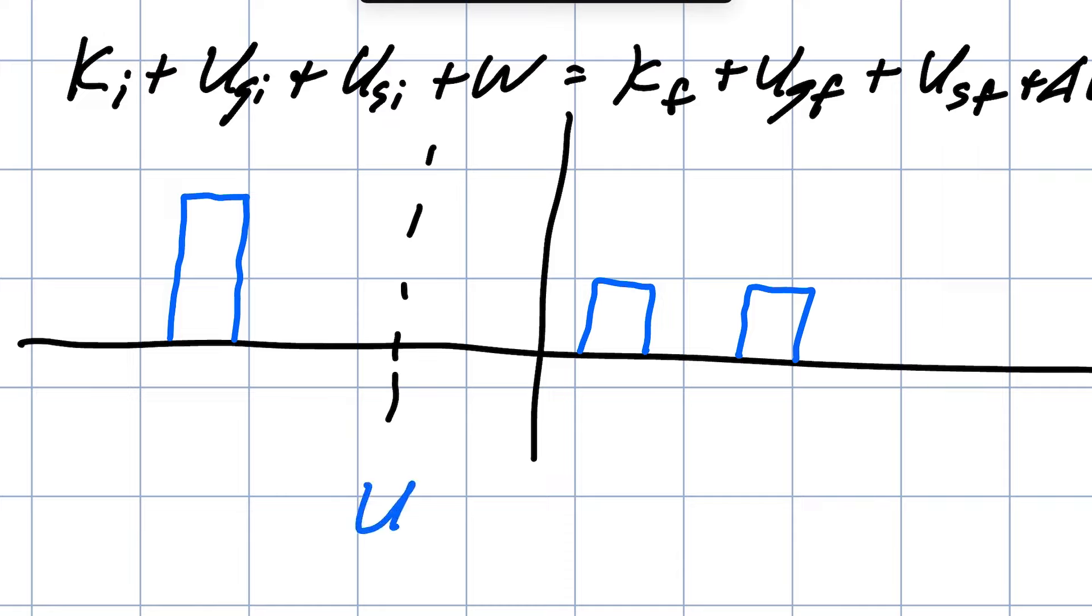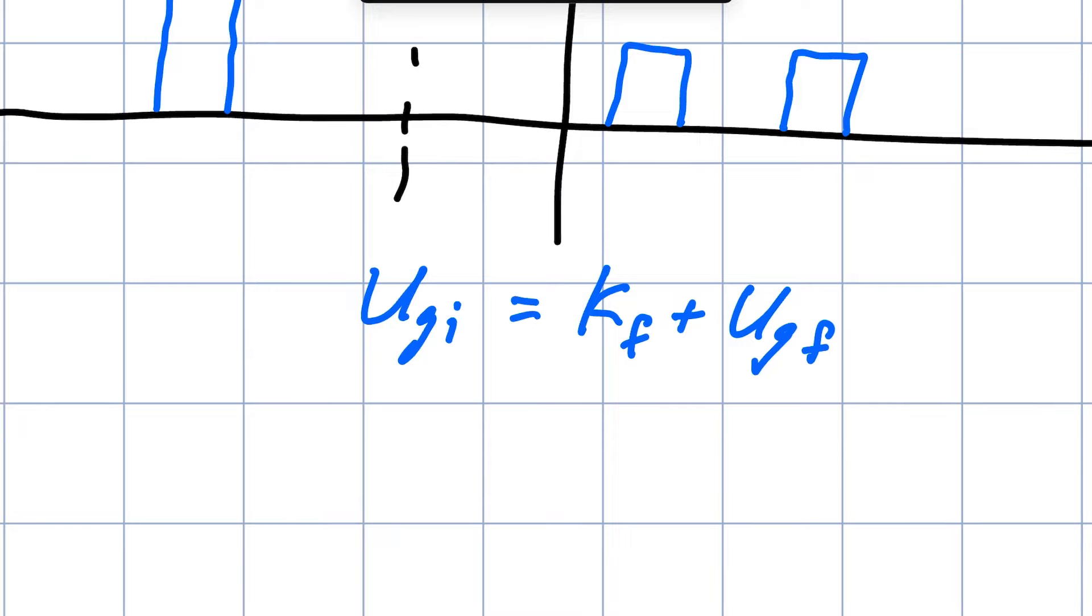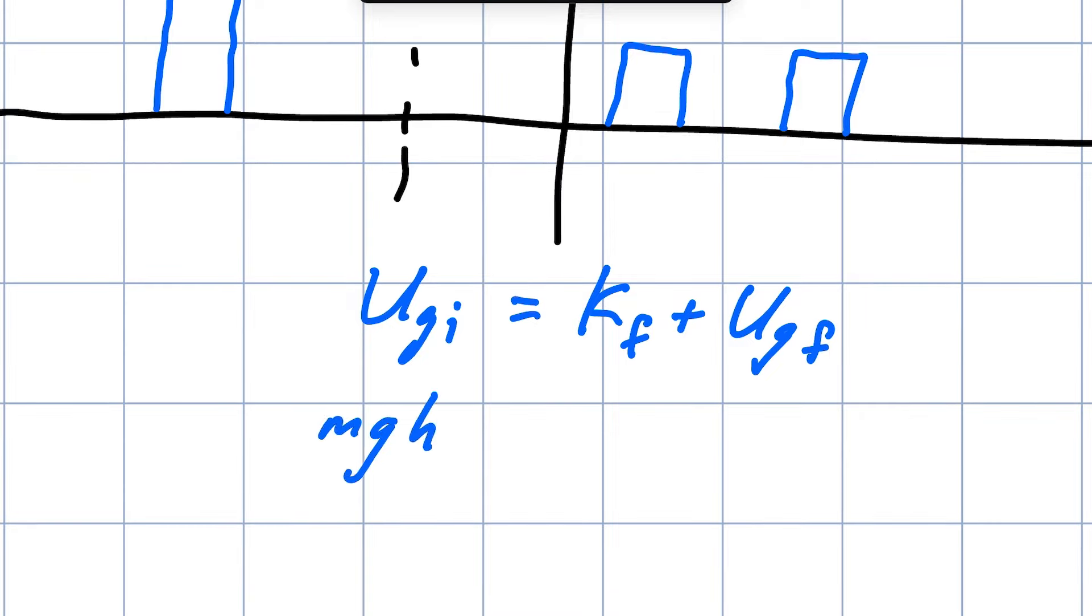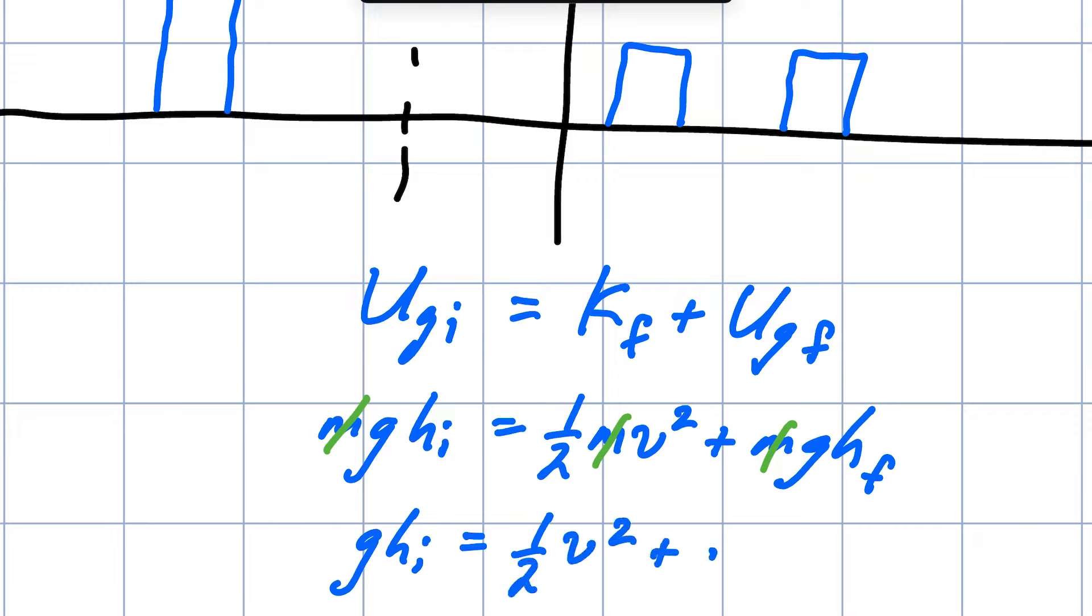And so we know that UGI is equal to KF plus UGF. Now we substitute our equations for these types of energy. So this is MGHI equals one-half MV squared plus MGHF. One quick thing we'd like to do right away is just get rid of the M's. If we divide everything by M then the M's disappear. And so we have GHI equals one-half V squared plus GHF.